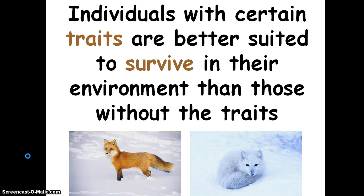Individuals with certain traits are better suited to survive in their environment than those without the traits. In this picture, the fox with the orange fur is probably at a disadvantage compared to the fox with the white fur, because the fox with the white fur can blend in, avoid predators, and sneak up on prey easier than the fox with the brown or orange fur. So one type is more suited to the environment than another.